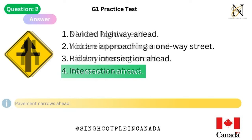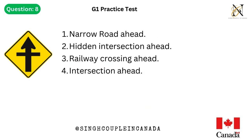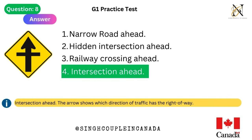Question 8. This traffic sign means: 1. Narrow road ahead. 2. Hidden intersection ahead. 3. Railway crossing ahead. 4. Intersection ahead. Answer is 4. Intersection ahead — the arrow shows which direction of traffic has the right-of-way.